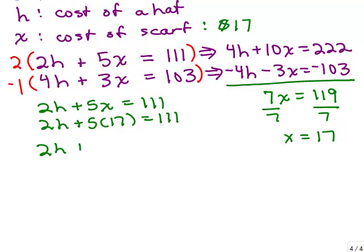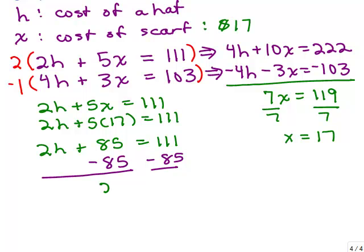So I have 2H plus 85 equals 111. We can subtract 85 from both sides, and that gives you 2H equals 26. Divide both sides by 2, so H is 13.